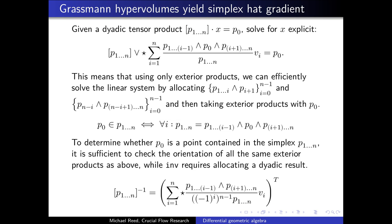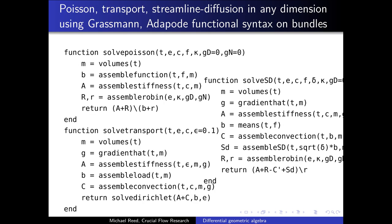Here we have an example of how the Poisson equation, the transport and the streamlined diffusion can be solved in any dimension using a unified syntax approach. This represents a way you can entirely rely on using Grassmann exterior algebra at the local element level, while constructing a large matrix linear representation on the global assembly.